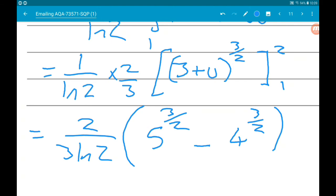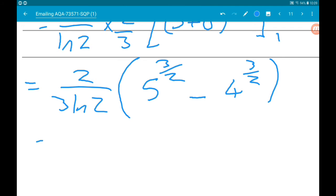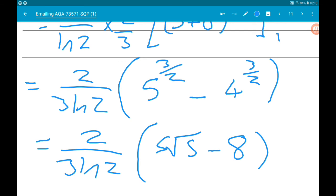At this point you would be fine to get your calculator out to sort out the numbers in the bracket, not my style though. So this is equal to 2 over 3 log 2. 5 to the three halves means 5 cubed square rooted, so 5 cubed is 125, the square root of 125 is root 25 root 5, so that's going to be 5 root 5. And then minus 4 cubed square rooted, 4 cubed is 64, square rooted is 8. So that handsome little chap there is our solution in exact form. That's it for that question, good times, cheers.